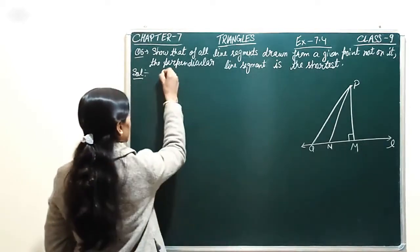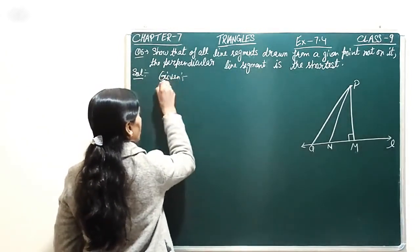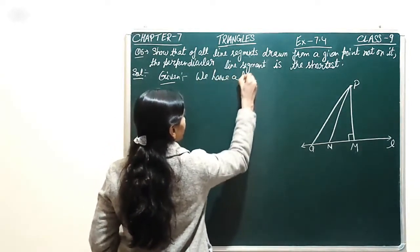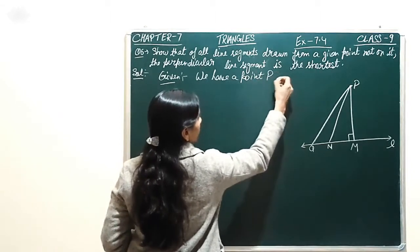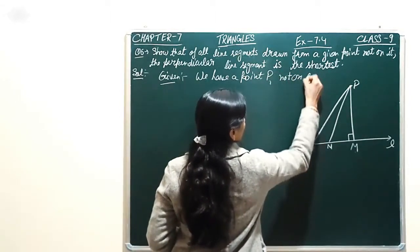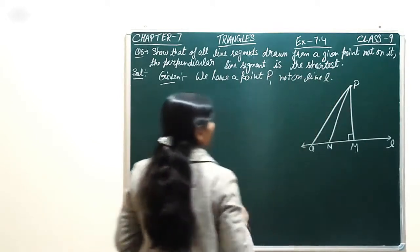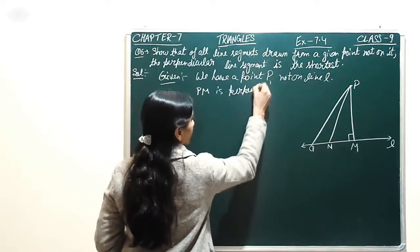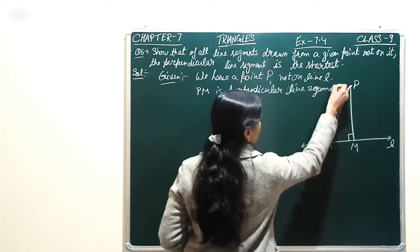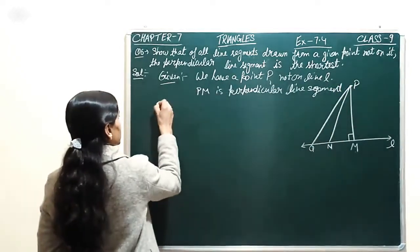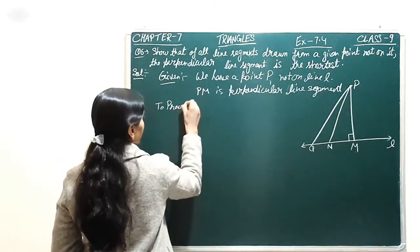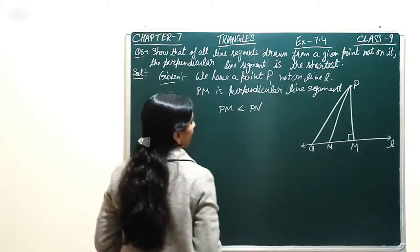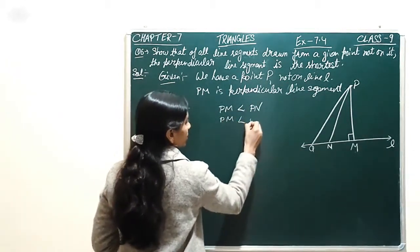So, first of all, what is given? We have a point P not on line L. And PM is the perpendicular line segment. And now, to prove: we have to prove that PM is the smallest.